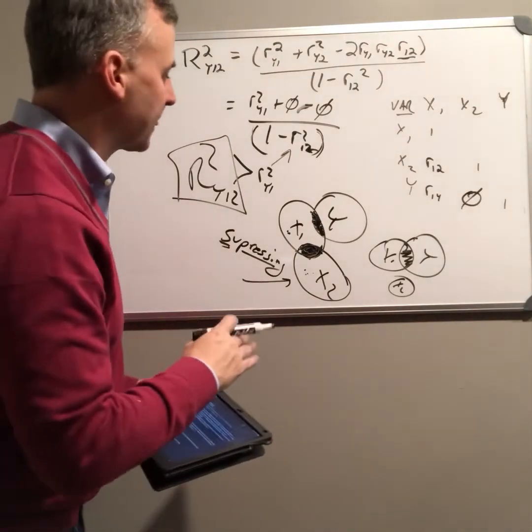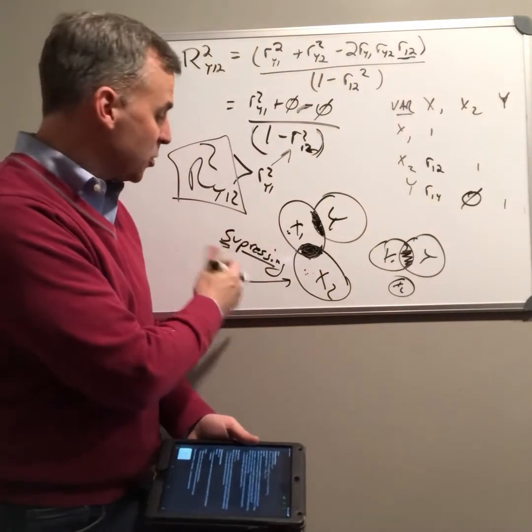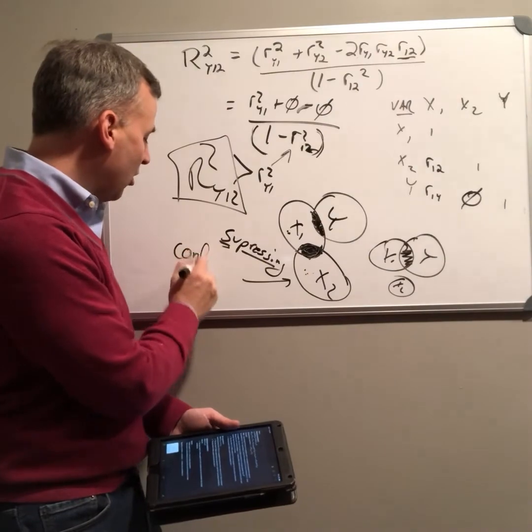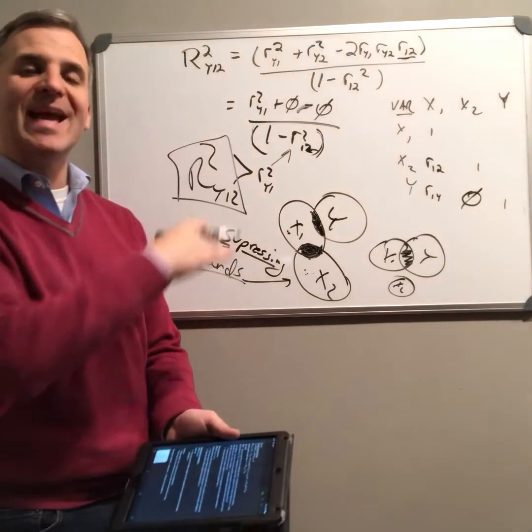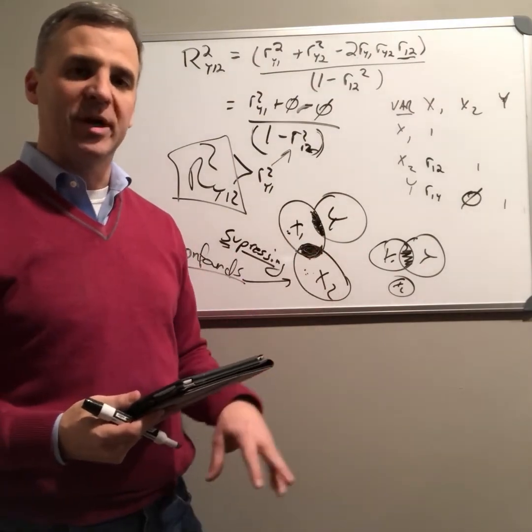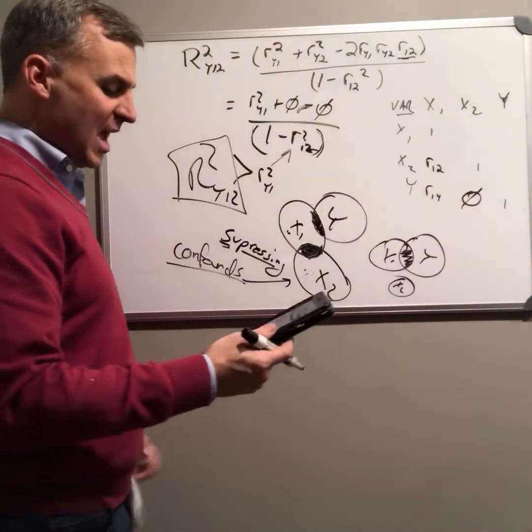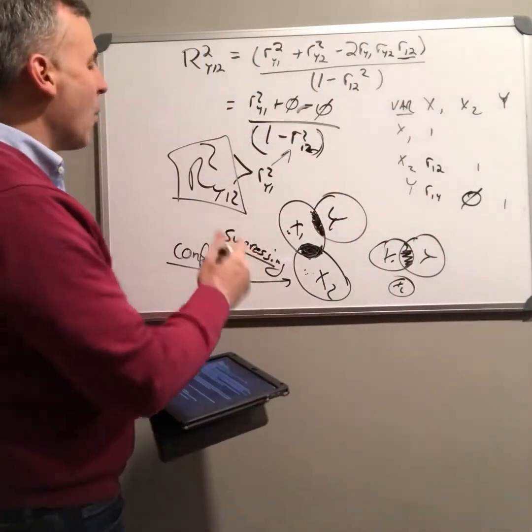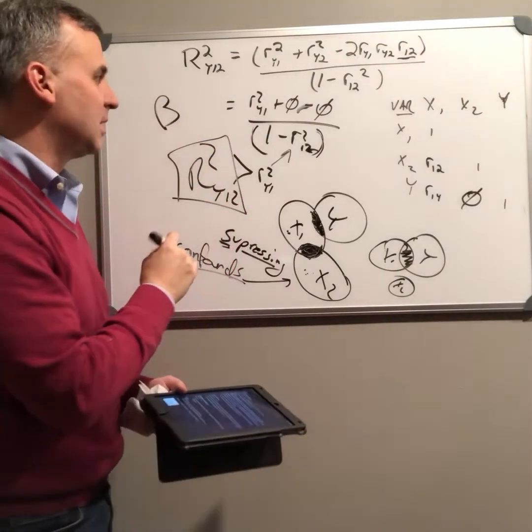So here's the bottom line here. Number one, sometimes we want to include suppressors. Sometimes we want to include what we call, and when we do, we call these confounds. Variables that are related to our predictors that we don't want included in our final prediction of the outcome. That's the first lesson here.